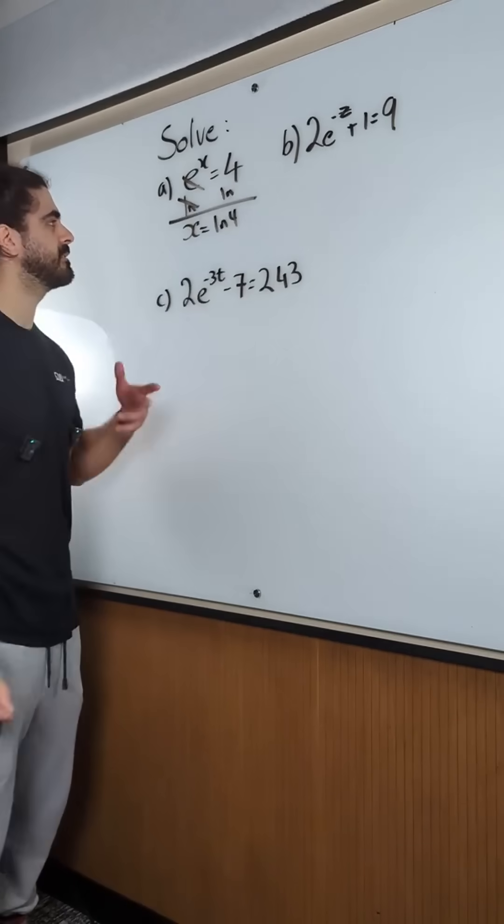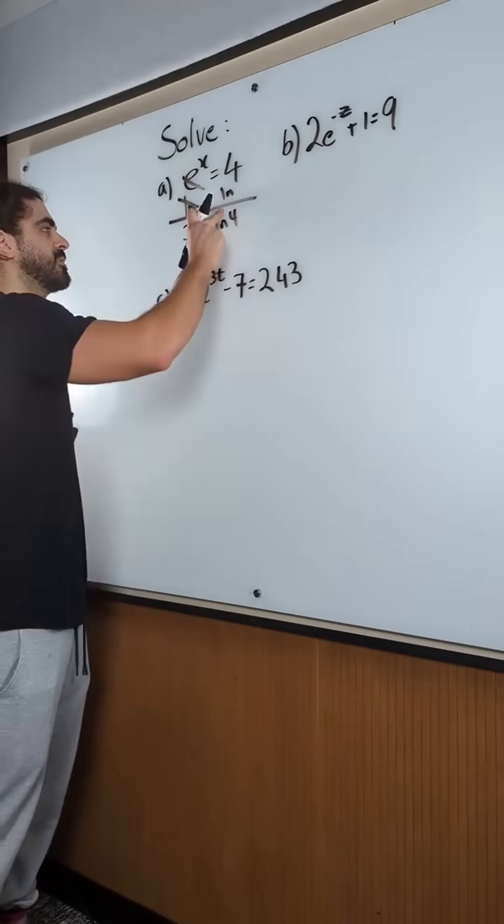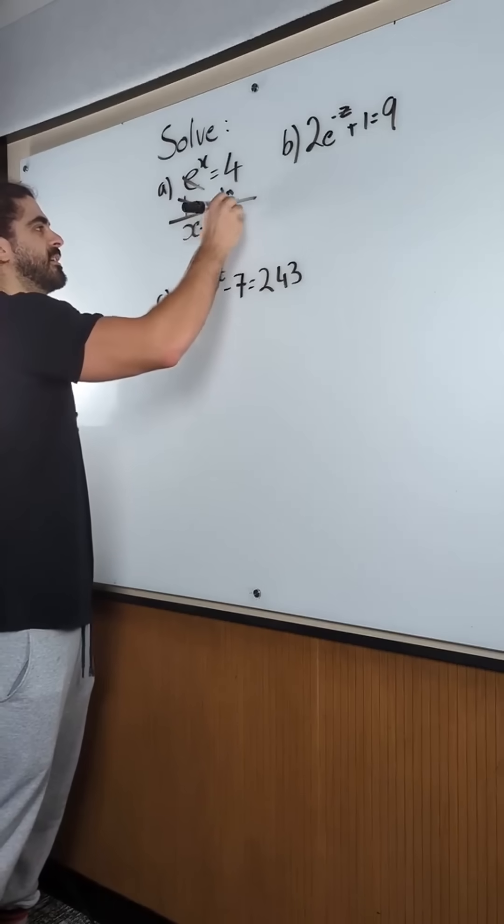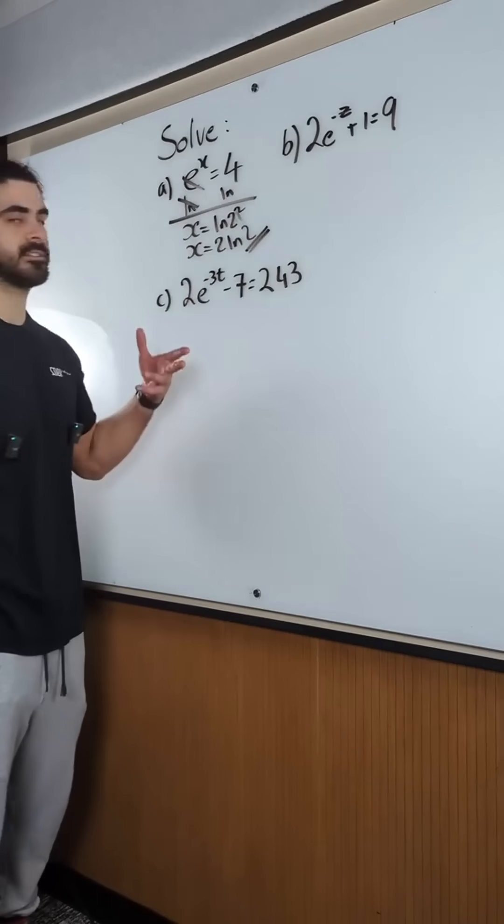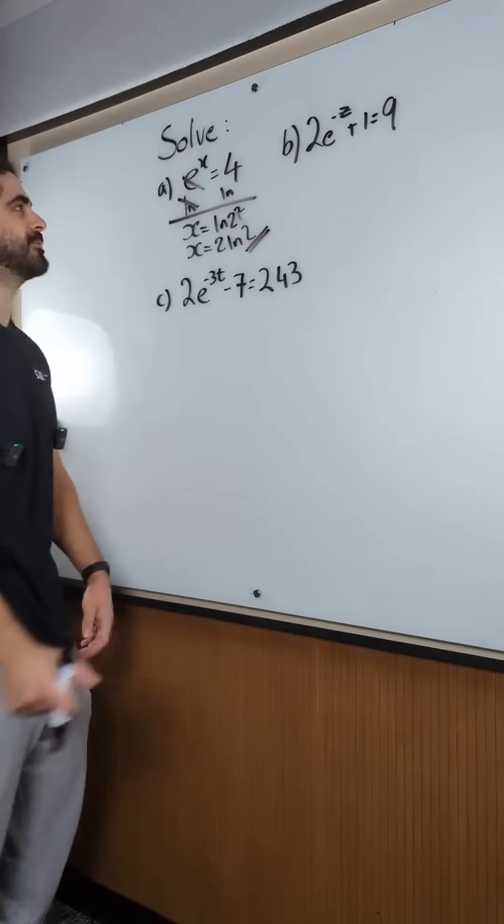Now, just to make this a bit more spicy, let's write ln 4 as ln of 2 squared. You don't have to do this. And bring down the 2: 2 ln 2. Yeah, same as ln 4.